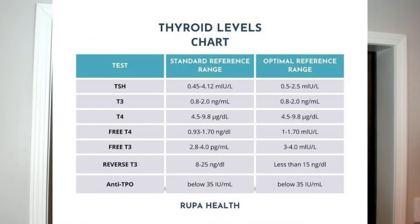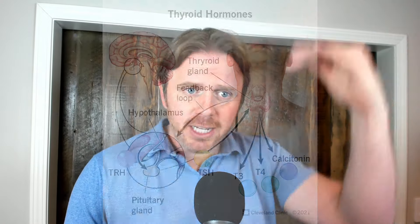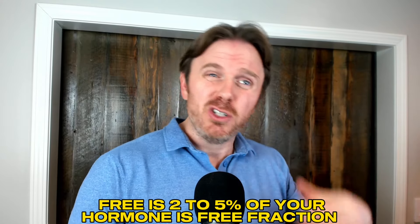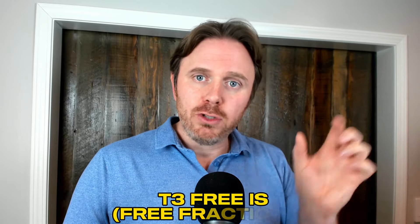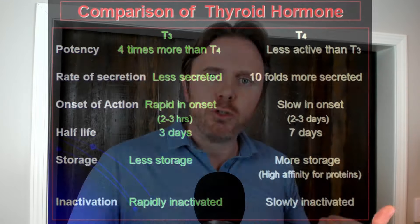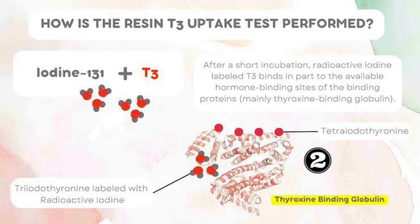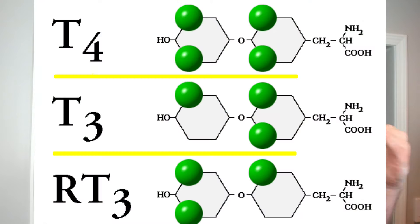So first off, when you run a complete thyroid panel, we're going to run a couple of markers — we'll put them on screen. TSH is going to be the first one; that's actually a brain hormone. We're going to run T4 free, maybe T4 total with it. Free is two to five percent of your hormone that is the free fraction, so your free gets you the bioavailable bits of it. Then you have your T3 free — same thing, we can do the total as well. T4 is less active than T3; T3 is about 300% or so more active than T4. So TSH, T4, T3 — and then we have antibodies that may be interacting, creating inflammation, impacting the gland's function and ability to synthesize thyroid hormone and impacting hormone binding. We may also look at T3 uptake, but usually you can get a window into uptake with T3 free, and then we may also look at reverse T3.